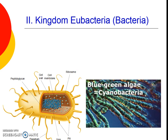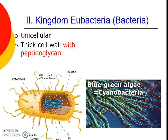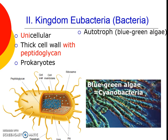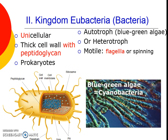Sometimes instead of calling them bacteria we call them eubacteria, because we think of these as our more common true bacteria. The prefix 'eu' means true — the true bacteria. This kingdom is also unicellular. It does have that extra molecule in the cell wall, so they both have cell walls but eubacteria has that molecule embedded. They're also prokaryotes. They can be autotrophs like blue-green algae, or heterotrophs. Most of them are motile using flagella, but some are non-motile. Almost all the characteristics are the same — these are more common, less extreme, and have slightly different cell walls.